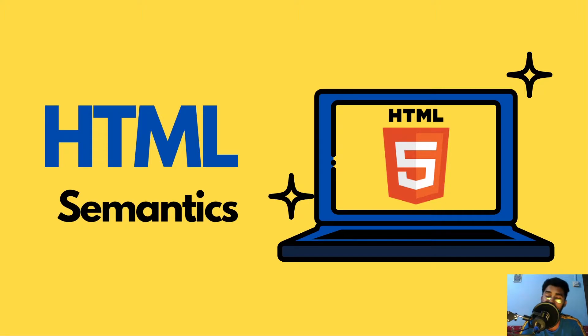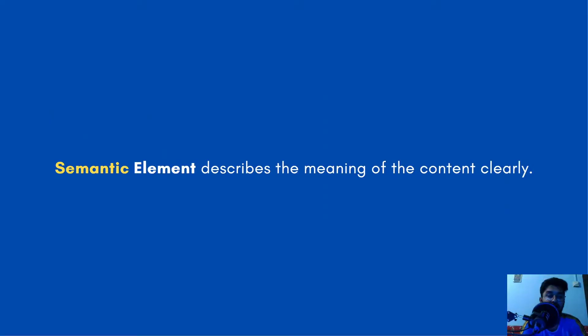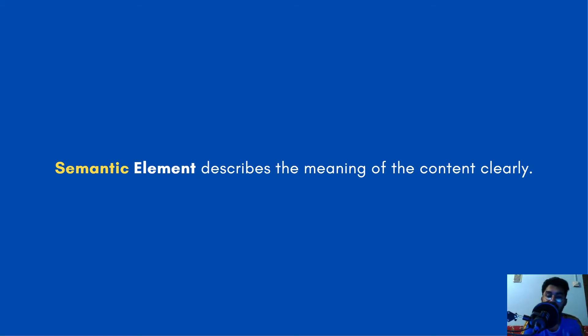Hello everybody, this is Vadali and this video is about the semantic elements in HTML. What are semantic elements? A semantic element describes the meaning of the content clearly. There are two types of elements: semantic and non-semantic. A non-semantic element tells nothing about the content, but a semantic element describes the meaning of the content clearly.